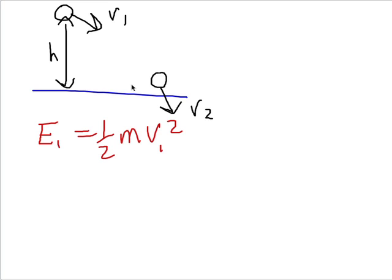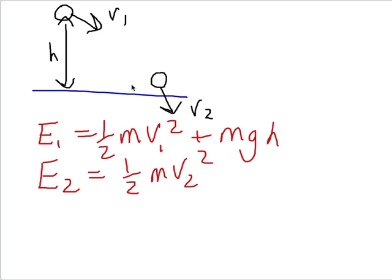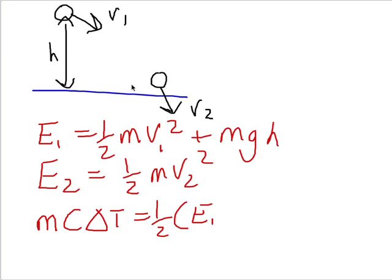In this case h is 100 kilometres, which sounds a lot but it's a very small fraction of the radius of the Earth — 6,400 kilometres — so the mgh approximation will work just fine. So we get mgh for the initial energy, and the final energy is going to be half mv2 squared, and the difference between them is going to go into heating it up. The thermal energy change is going to be the mass times specific heat capacity times the change in temperature, equal to half of E1 minus E2, and we can plug those in.